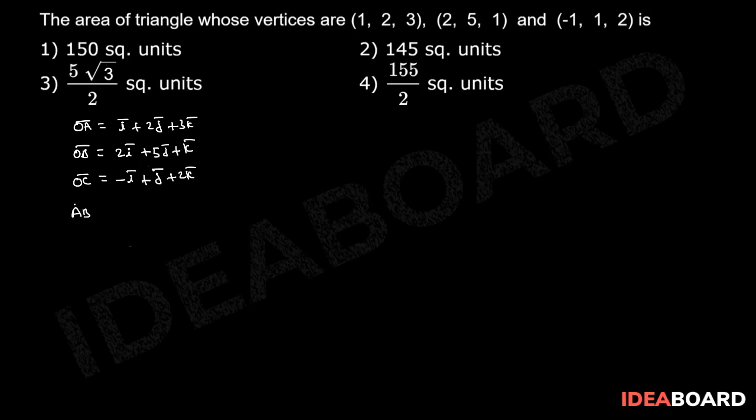Now, AB bar equals to OB bar minus OA bar, that equals to I bar plus 3J bar minus 2K bar. Similarly, AC bar equals to minus 2I bar minus J bar minus K bar.